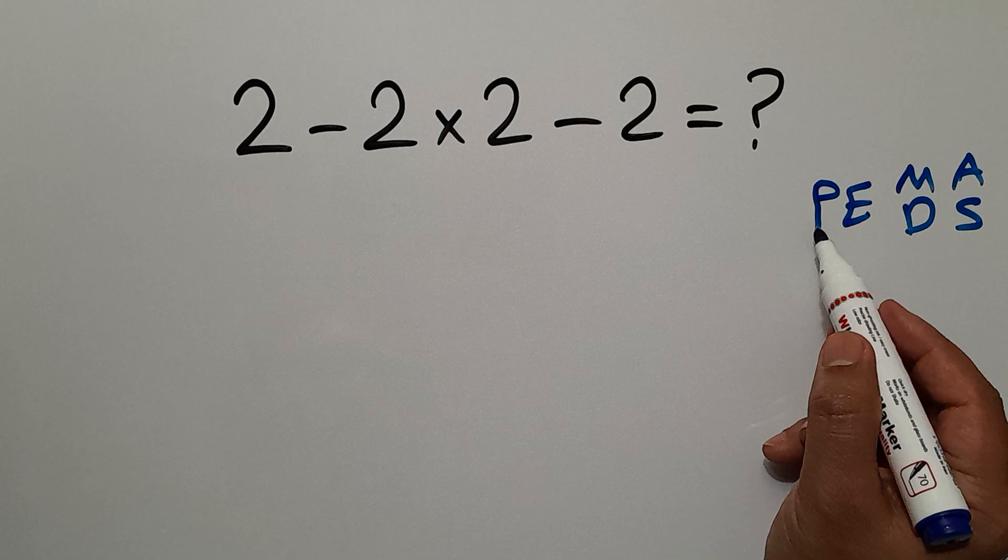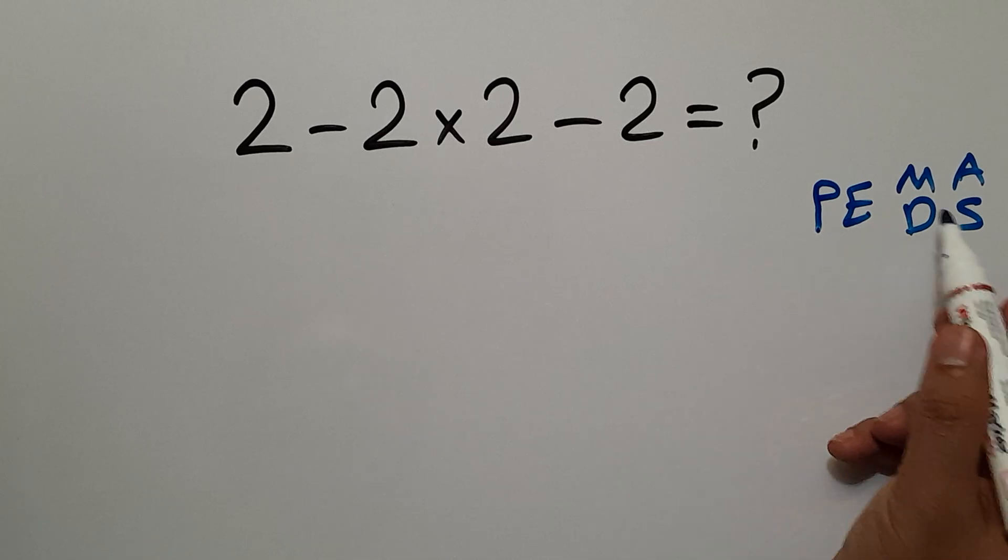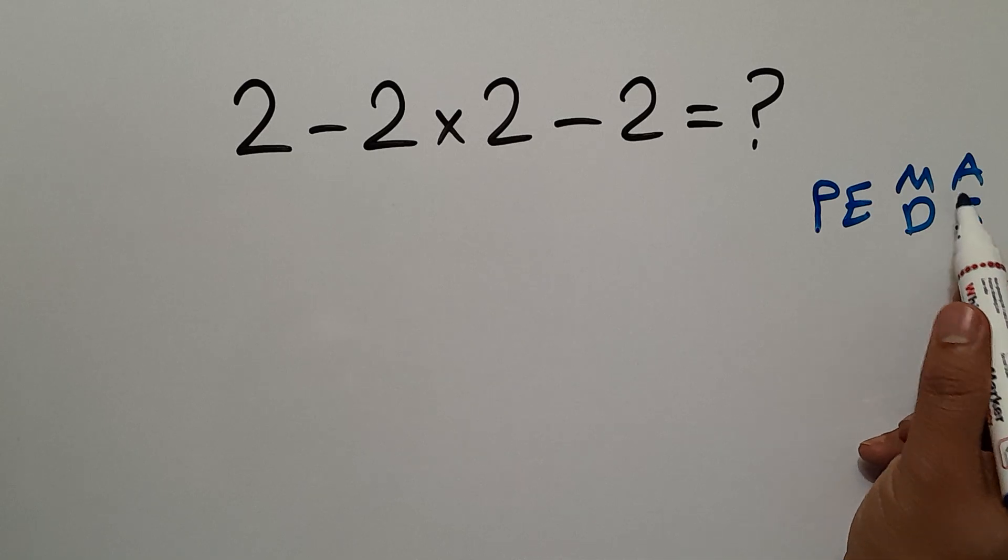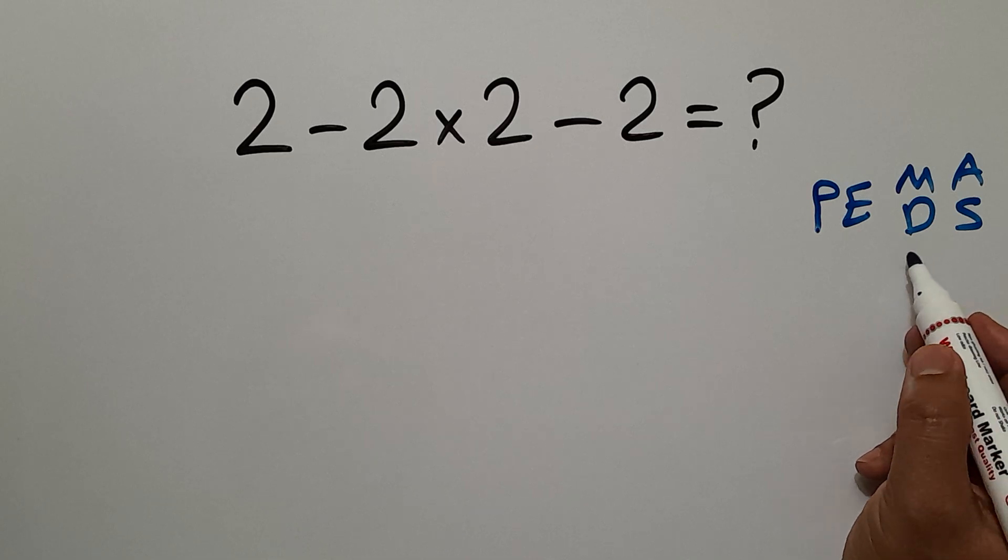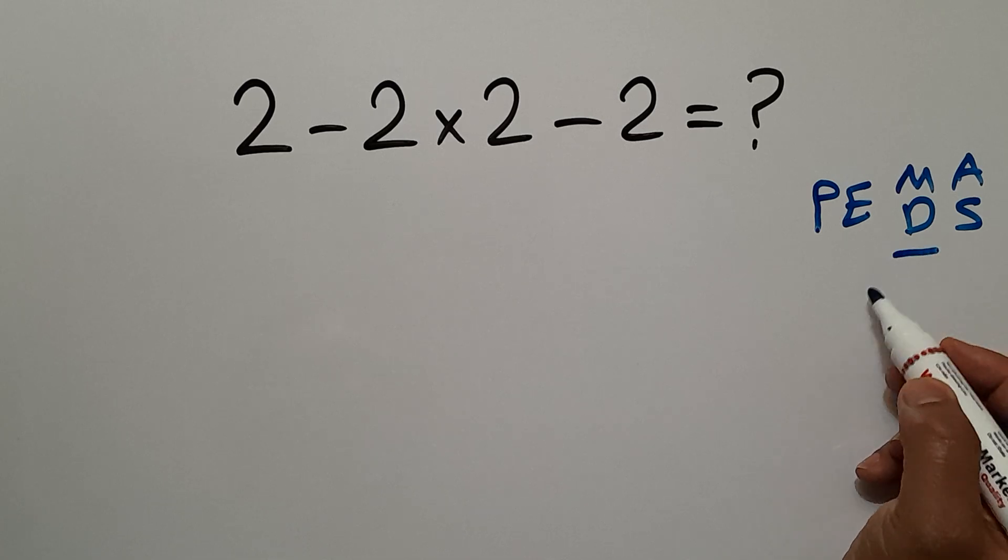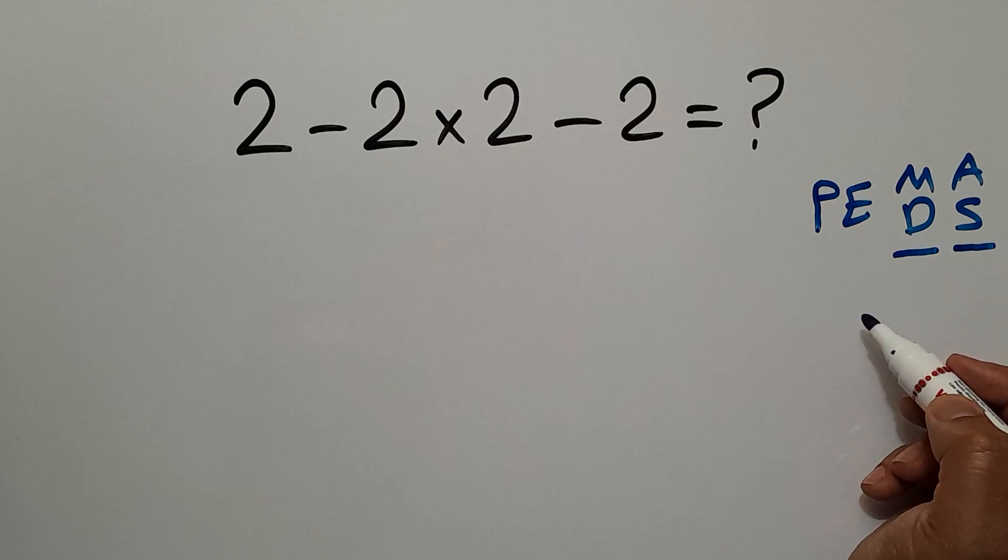We first do parentheses, then exponents, then multiplication or division, and finally addition or subtraction. Remember that multiplication and division have equal priority and we have to work from left to right. And the same applies to addition and subtraction.